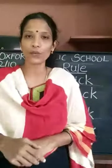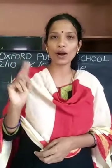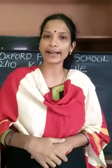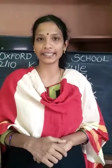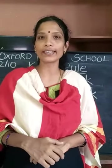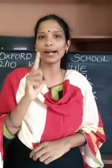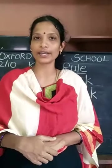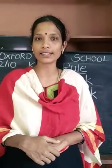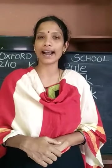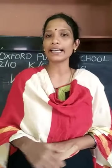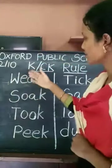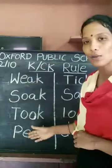When a word comes with two vowels and ends with K sound, write K at the end. When a word comes with one vowel and ends with K sound, write CK at the end. Here, I have written a few words with two vowels.